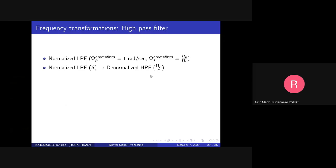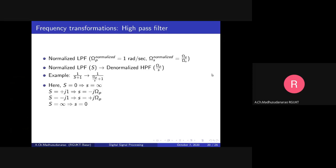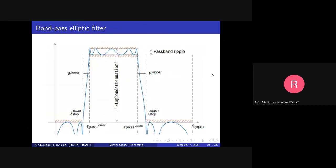Replace S with Omega_P / s in the H(S) expression in order to get the high pass filter with specifications Omega_P, Delta_P, Omega_S, and Delta_S.